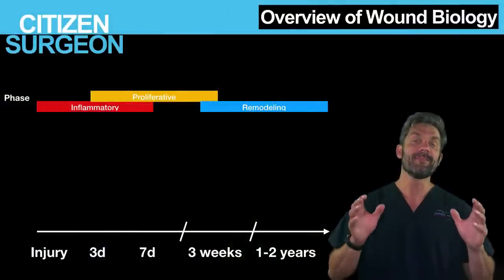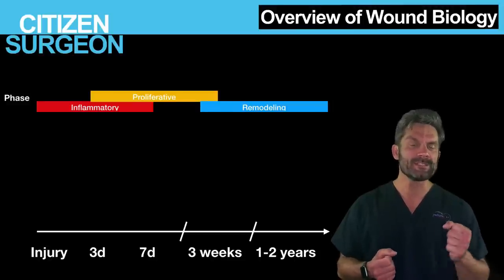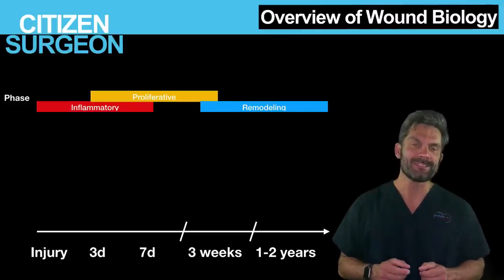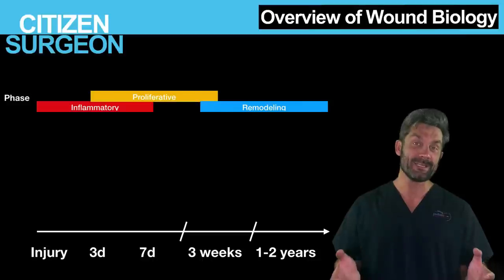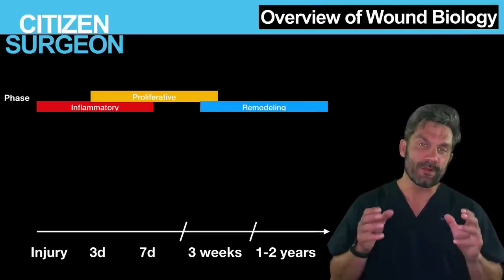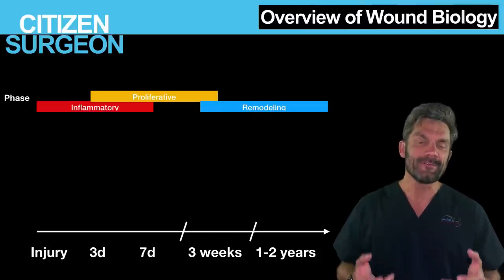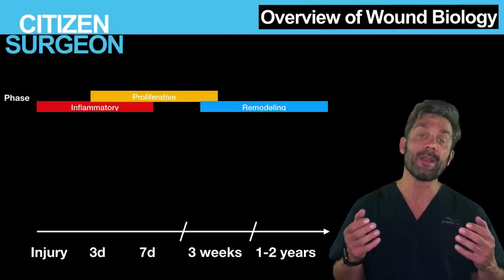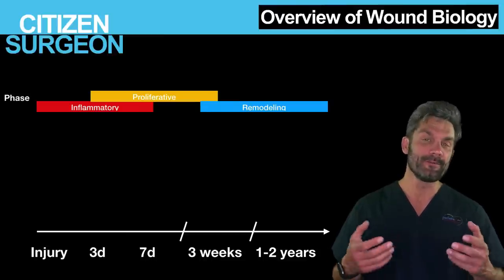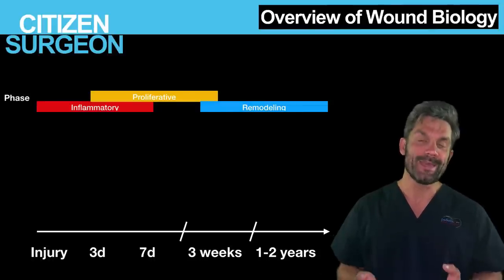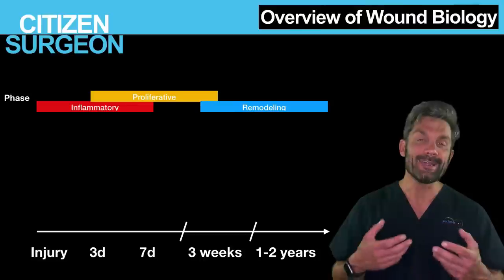I have a timeline set up at time of injury, three days, seven days, three weeks, and months to years. There are three phases of wound healing that overlap. First is the inflammatory phase, which kicks off right after injury and lasts about a week. Overlapping around day two to three is the proliferative phase, which goes for a few weeks. And that extends and overlaps with the remodeling phase, which can last up to two years as the scar matures.